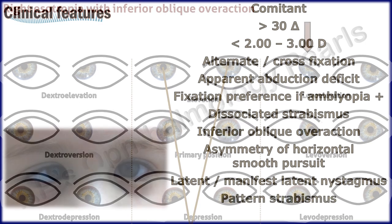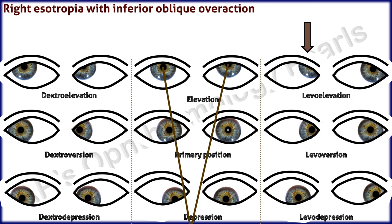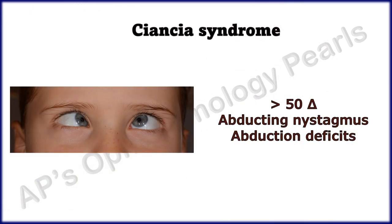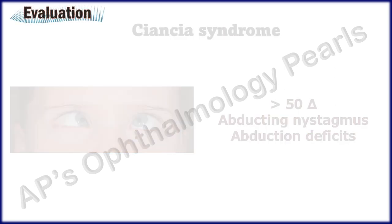Pattern strabismus may also be seen, with the V pattern more common due to inferior oblique overaction. The overaction may be asymmetrical, and this finding, in addition to fixation preference, is a strong indicator for the presence of amblyopia, especially in the eye with greater inferior oblique overaction. Ciancia syndrome is simply a severe form of infantile esotropia with esotropia greater than 50 prism diopters, presence of abducting nystagmus and abduction deficits. These children usually cross fixate.